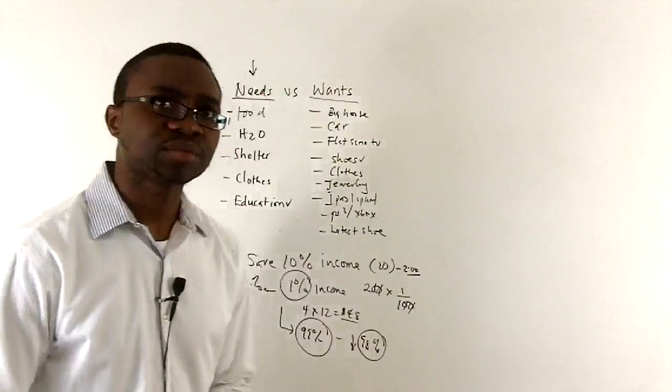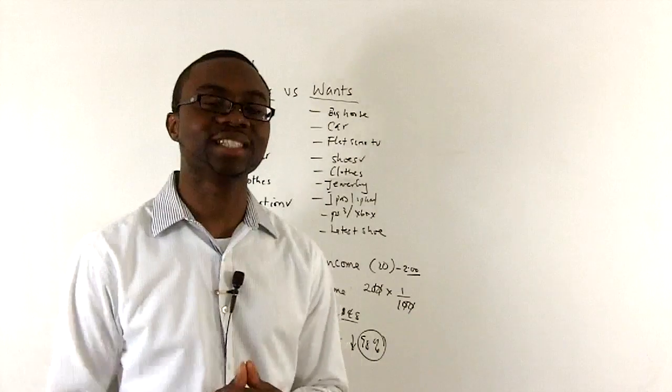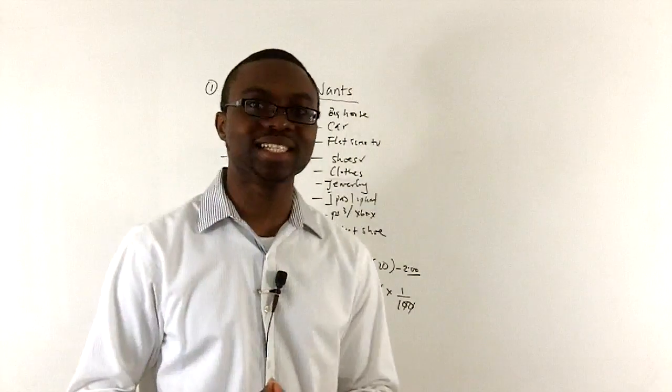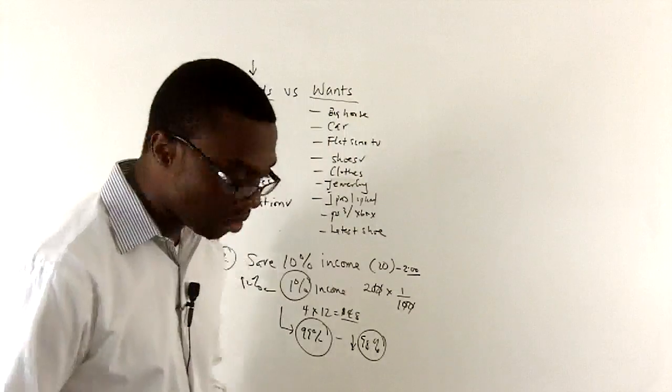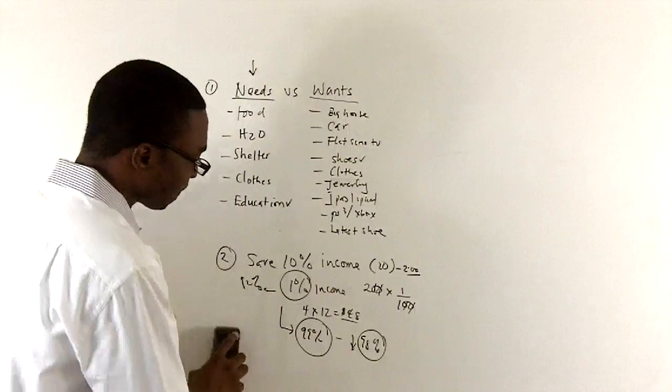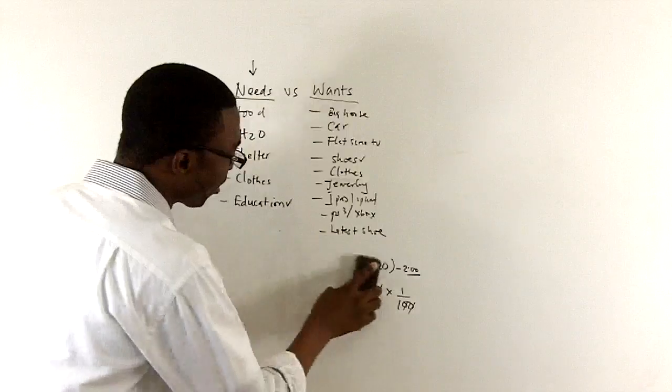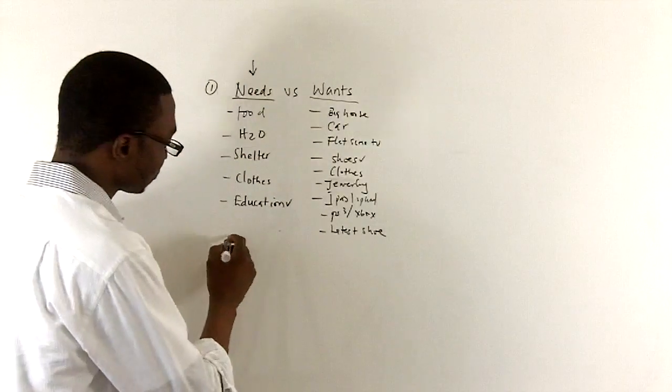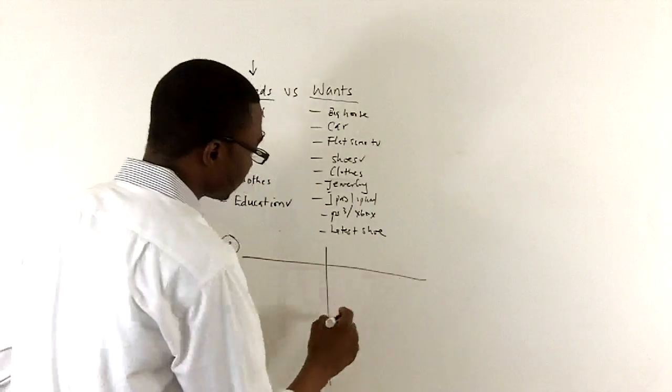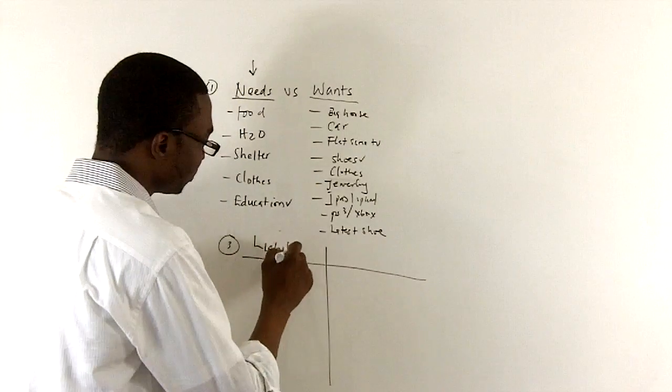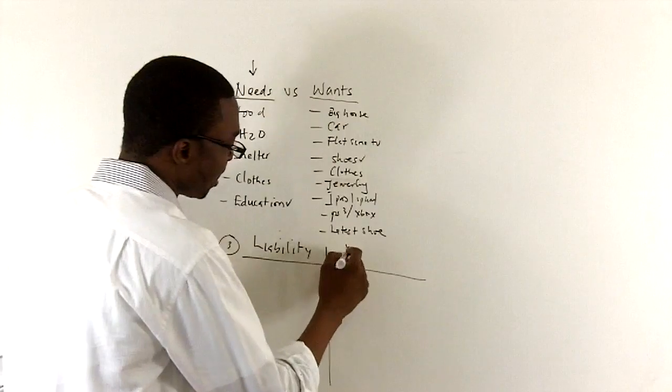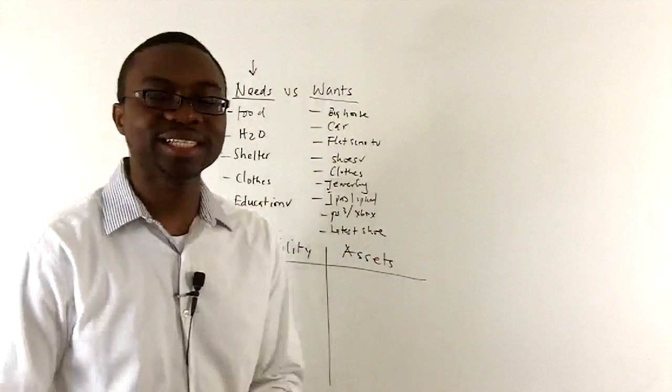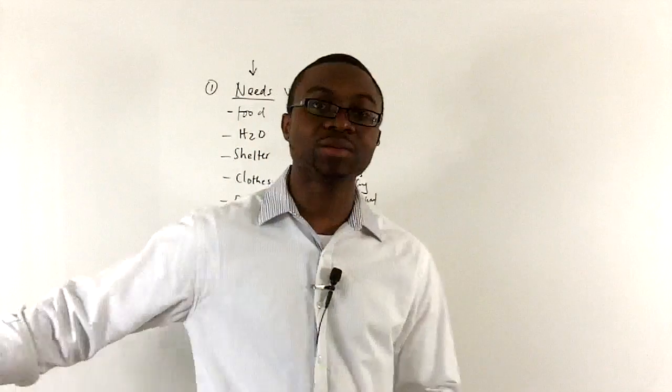Rule number 3, that will help you start to financially manage your life, is to start to itemize and see where all your money is going. I call them liabilities and assets. What is liability? Liability is anything that takes money out of your pocket.